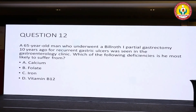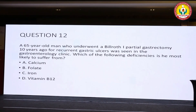A 65-year-old man who underwent Billroth I gastrectomy 10 years ago for a recurrent gastric ulcer was seen in the gastroenterology clinic. Which one of the following deficiencies is he most likely to suffer from? Option A: calcium. Option B: folate. Option C: iron. Option D: vitamin B12.